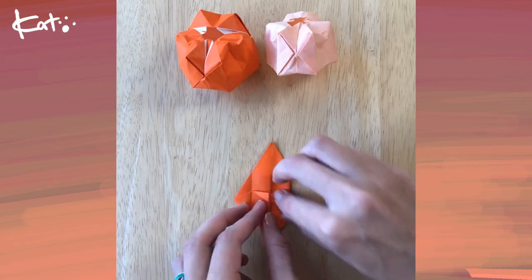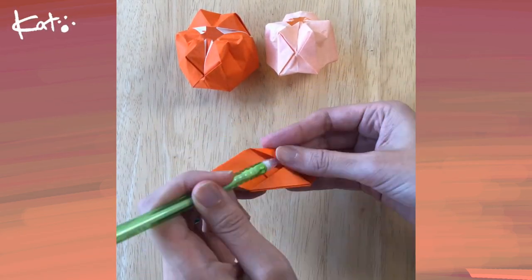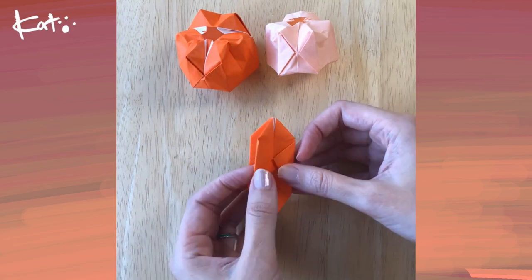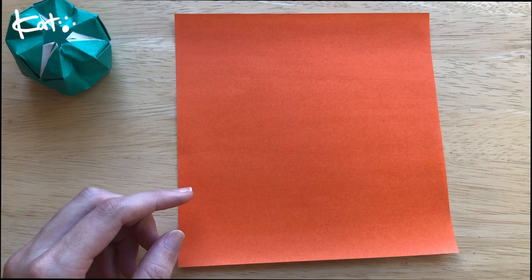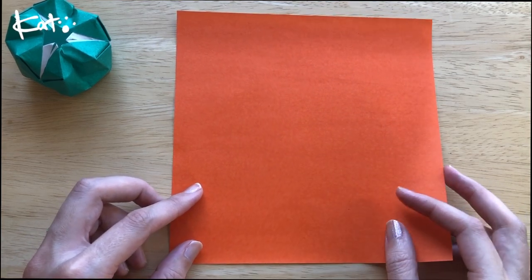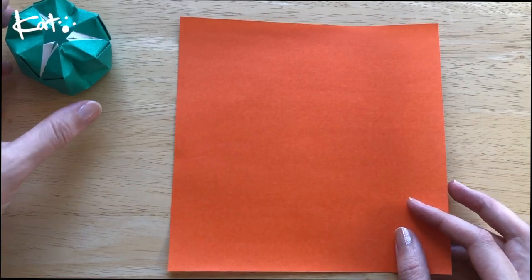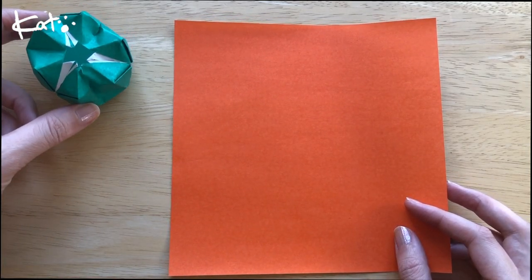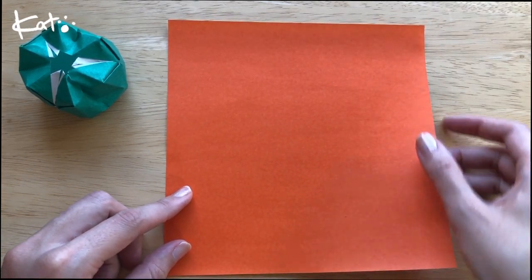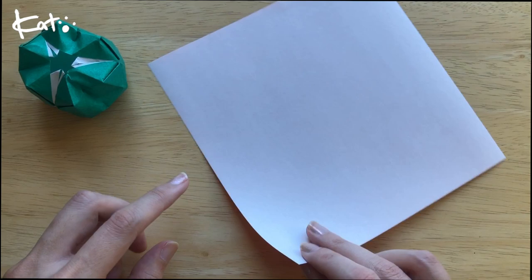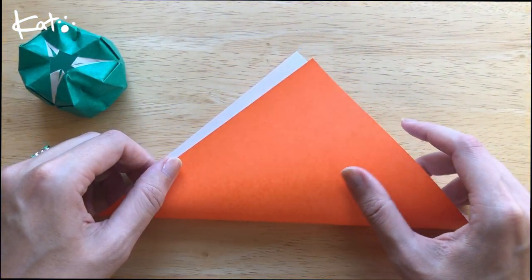We are starting with a square piece of paper. It can be orange or it could be white or any other color you choose, or even green. You're going to start with six by six or seven by seven inch piece of paper is what I have.